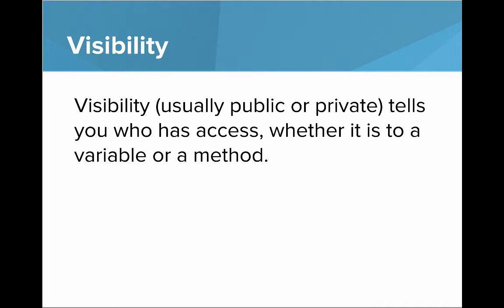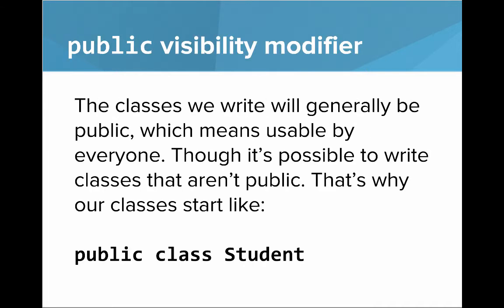First, the public visibility modifier. The classes we write will generally be public, which means usable by everyone, though it's possible to write classes that aren't public. That's why our classes start like public class Student. The visibility on this class is public. This also means that the class name needs to match the file name.